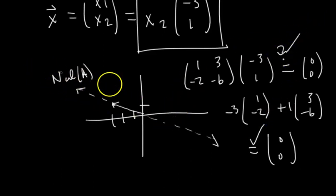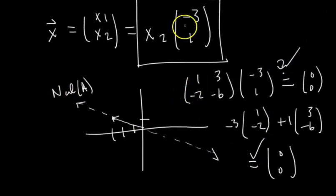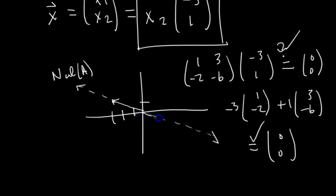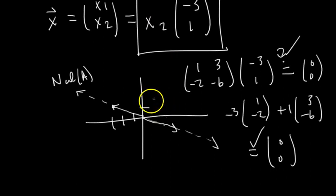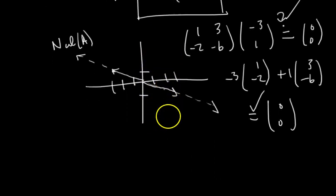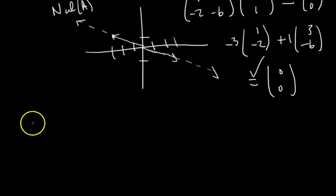But we determine that the null space is the span of the vector negative 3, 1. So we could have picked any vector along this line. Let's pick this one right here. So let's say x2. Let's pick x2 to be negative 1. Right? It's a free variable. It could be anything we want. So now we're talking about the vector 3, negative 1.